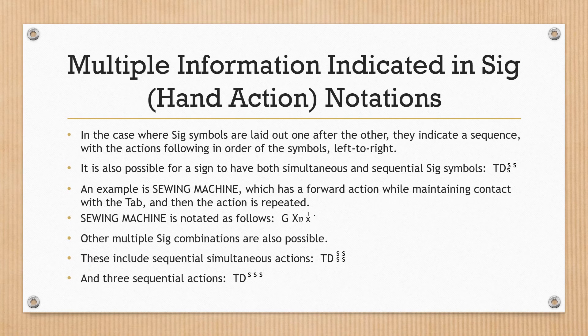Multiple information indicated in SIG hand action notations. Where SIG symbols are laid out one after the other, they indicate a sequence with actions following in order left to right. It is also possible for a sign to have both simultaneous and sequential SIG symbols. An example is SEWING MACHINE, which has the forward action while maintaining contact with the TAB, and then the action is repeated. Other multiple SIG combinations are also possible, including sequential simultaneous actions and three sequential actions.